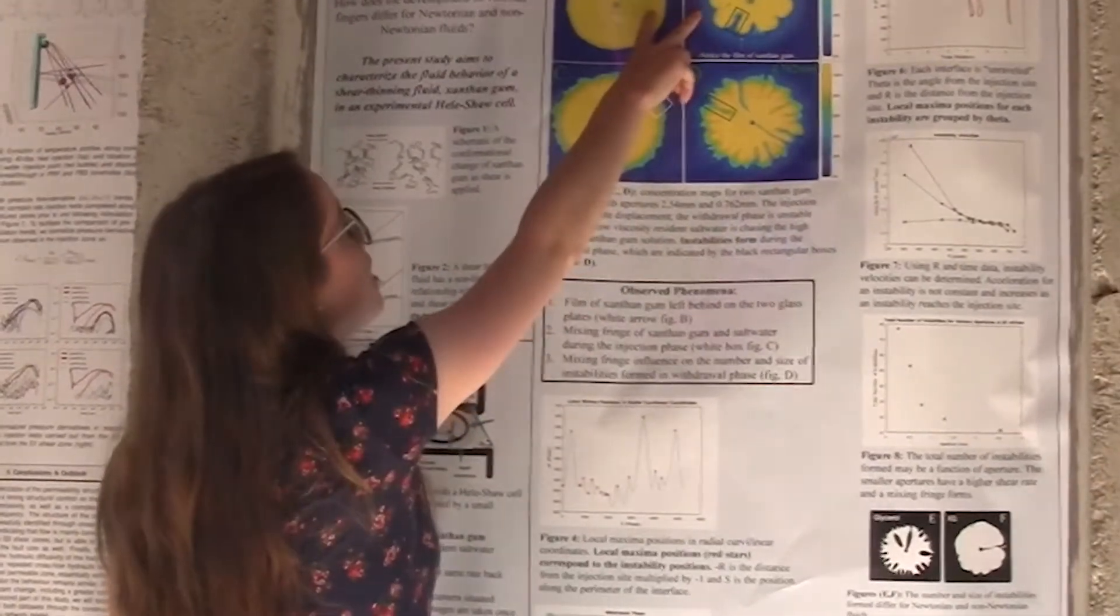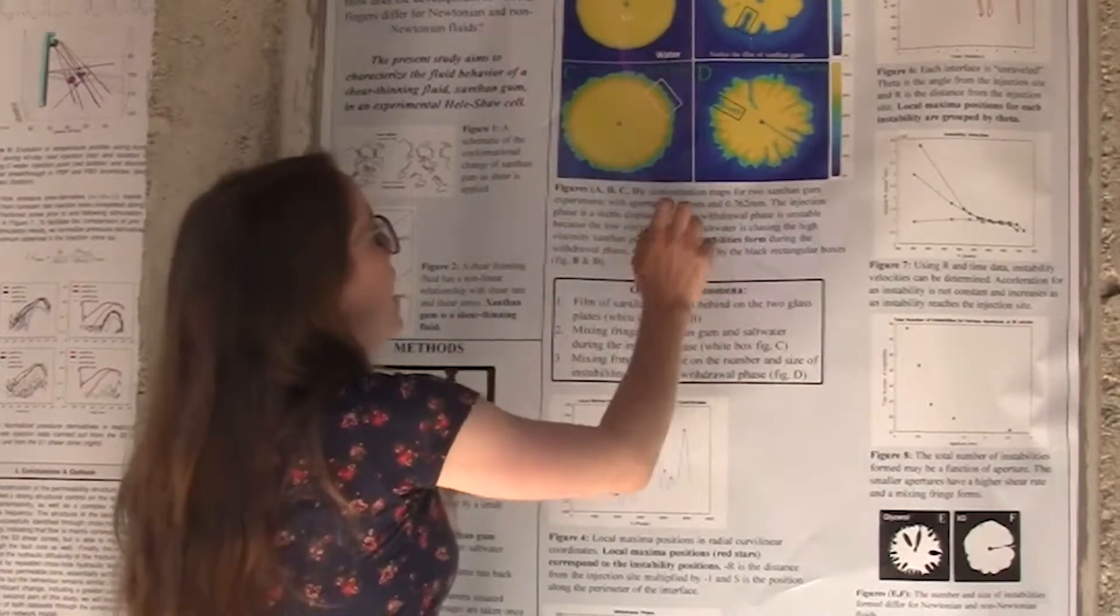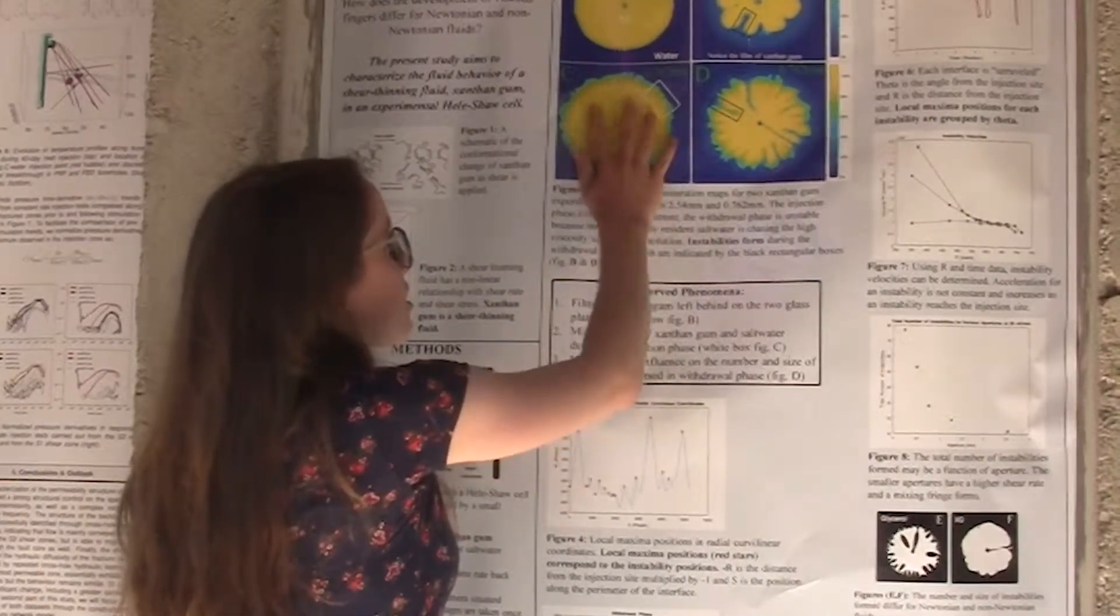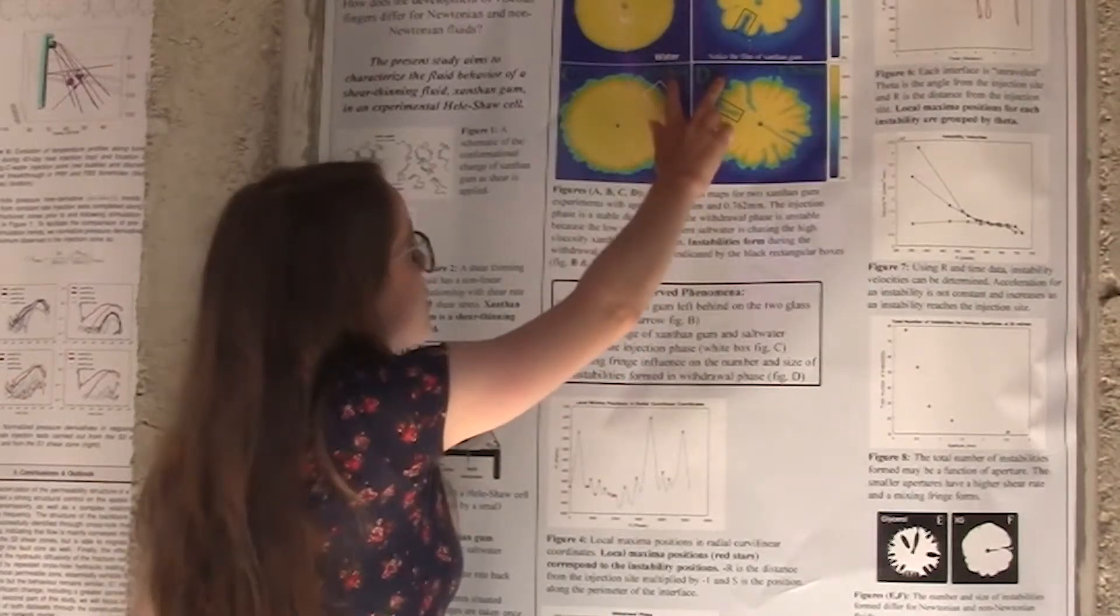So these two images up here are from an aperture of 2.5 millimeters. And the two images here, injection and withdrawal, have an aperture of 0.76 millimeters, so it's smaller.